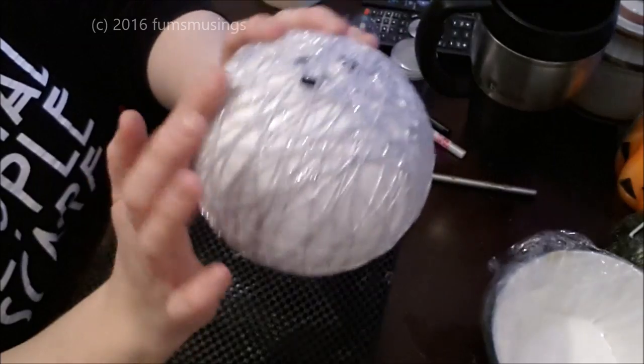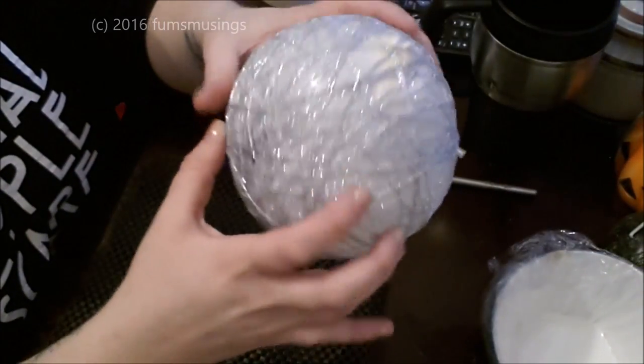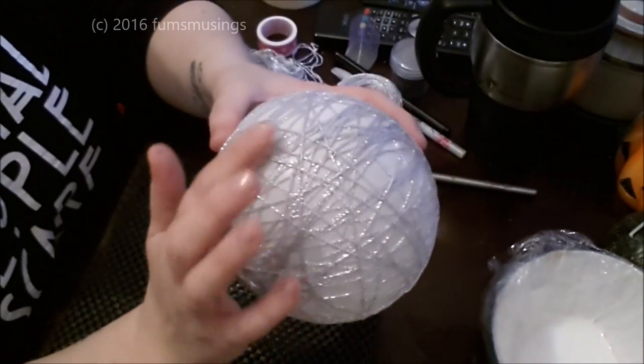Then when you've wrapped it all the way around the balloon, just coat it in a bit of extra PVA glue here and there, make sure it's well stuck, and then leave it to dry overnight.